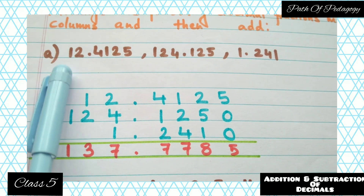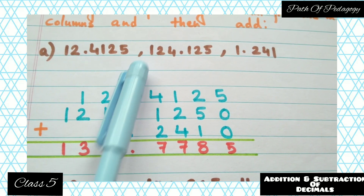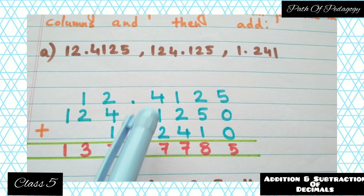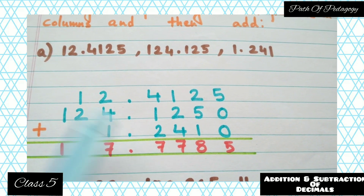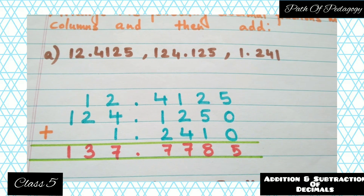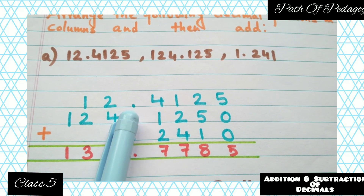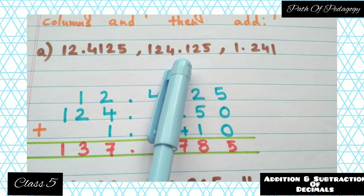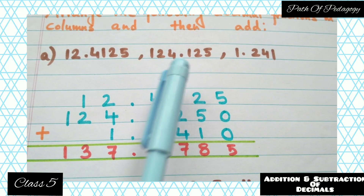The first number is 12.4125 — just write it down. Remember one thing: whenever you are going to add or subtract decimals, where the decimal point is present, you have to give one space after each and every number. So write 12.4125, then after that 124.125 — just write it down as it is.